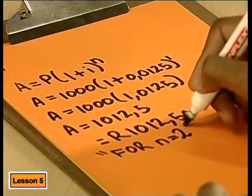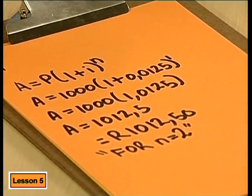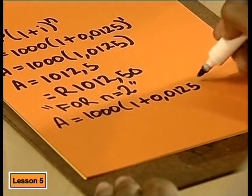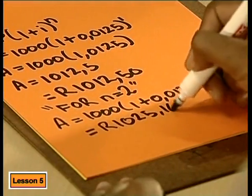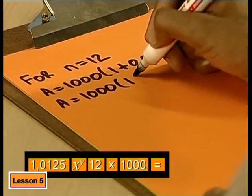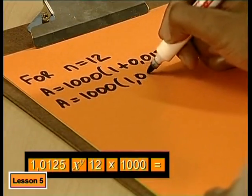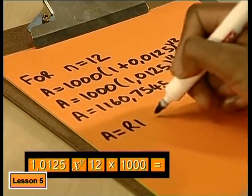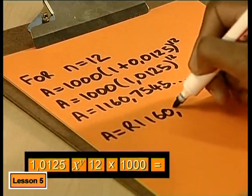Now let's see what happens after two months. I just change N to 2 in the formula. Using the calculator: 1.0125 squared times 1,000 gives 1,025.16. We can use the same formula to find how much interest has been earned up to any month. Let's go straight to the last month of the year — N will be 12 this time. That's 1.0125 to the power of 12 times 1,000, giving 1,160.75. So over a year, my investment will earn about R160 without me doing anything.